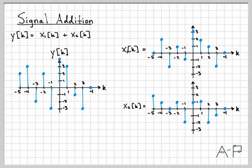So having added signal x1 and x2, I end up with this signal y[k]. That's one way to do it if you want to think graphically.